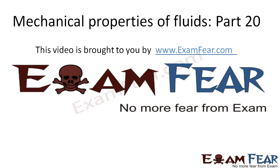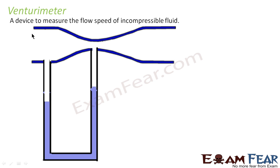This video on mechanical properties of fluids is brought to you by examfuel.com. We previously studied the flow speed of incompressible fluid through a tube of varying cross-section. Now we will learn about a device used to measure the speed of incompressible fluid. This device is known as a Venturimeter — a device to measure the flow speed of incompressible fluid.